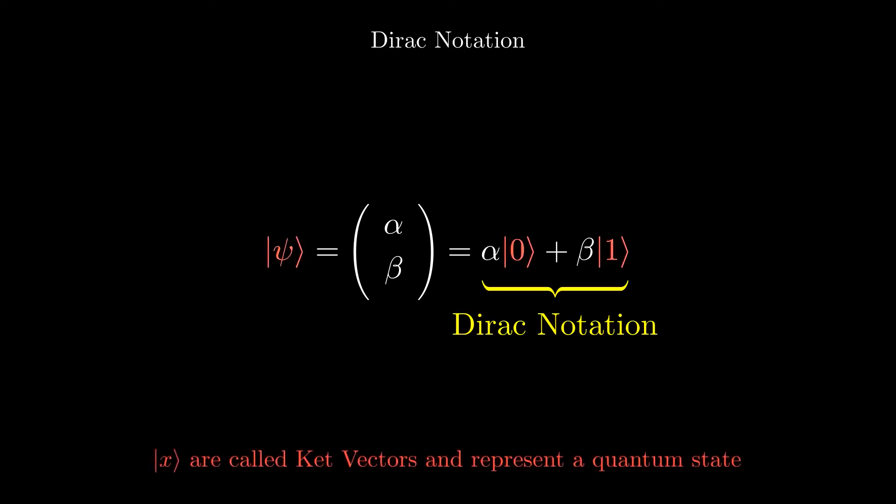Those brackets around the zero, one, and psi are called kets. All they tell us is that zero, one, and psi are quantum states.